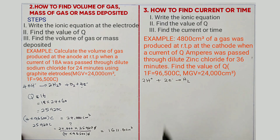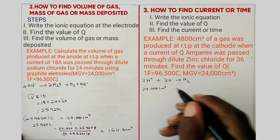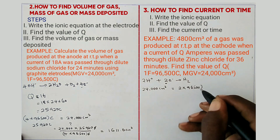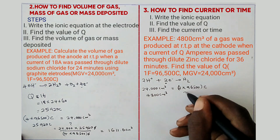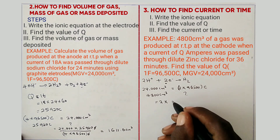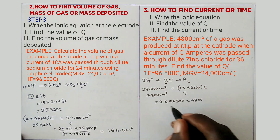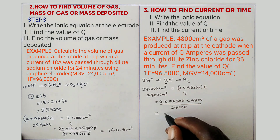Step two is to find the value of Q. Since the volume was produced at RTP, we say: 24,000 cm³ is equal to 2 × 96,500 C. What about the volume of gas produced, which was 4,800 cm³? So Q = 2 × 96,500 × 4,800 ÷ 24,000. The answer is 38,600 C.